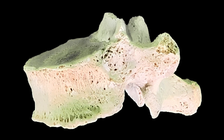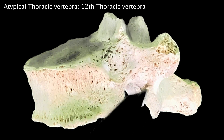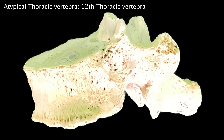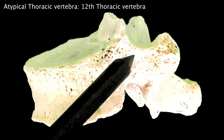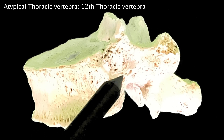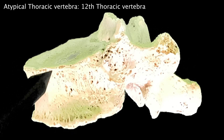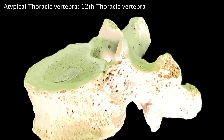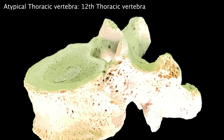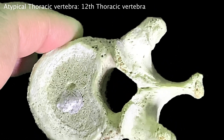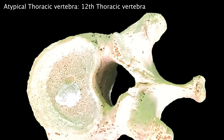Now you are looking at the 12th thoracic vertebrae. It resembles the L1 vertebra. The transverse processes are very small with three tubercles, and there is no articular facet on the transverse process. There is one single large costal facet on the side of the pedicle. The articular facets of the inferior articular processes are everted. The body is more of a bean-shaped structure — no longer heart-shaped — and this vertebra looks more like a lumbar vertebra.